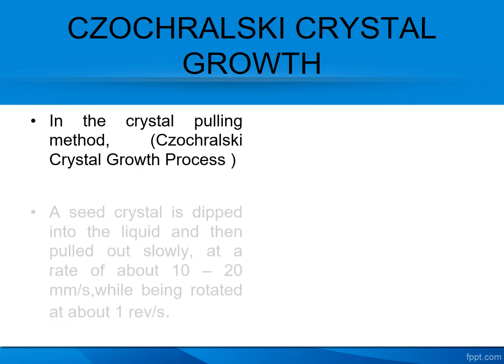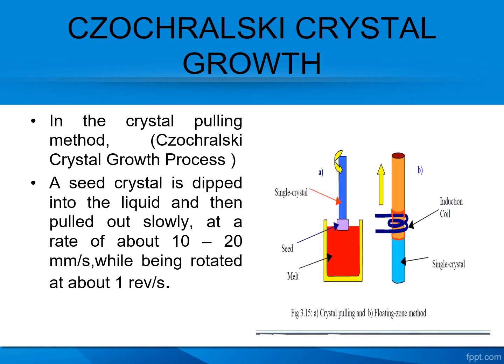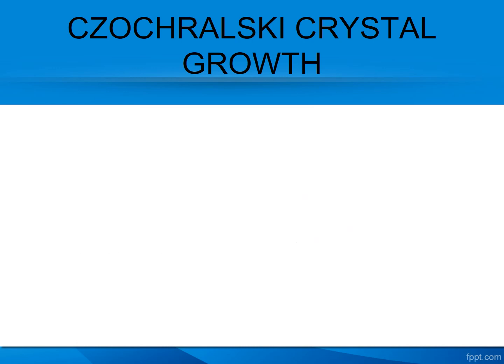Single crystal casting is also called the Czochralski crystal growth technique, or crystal pulling method. A seed crystal is dipped into the molten metal and then pulled out at a rate of 10 to 20 mm per second, while rotating at about one revolution per second.